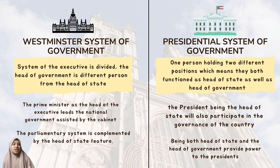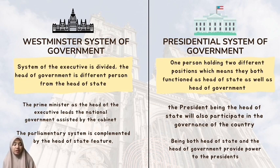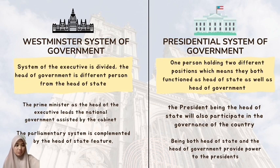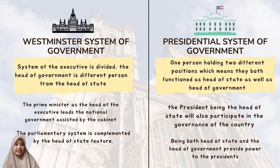In the Westminster system, the head of state is different from the head of government, in which both are two different people exercising two different functions. The prime minister as head of executive leads the national government, assisted by the cabinet, whose members are specialized in areas of public importance. The head of state typically applies the system of hereditary constitutional monarchy. For example, in the United Kingdom, King Charles III is the hereditary ruler, granted succession after the late Queen Elizabeth II. In Malaysia, the Yang di-Pertuan Agong is elected from among the nine hereditary state rulers for a term of five years, and the head of the executive is the prime minister.